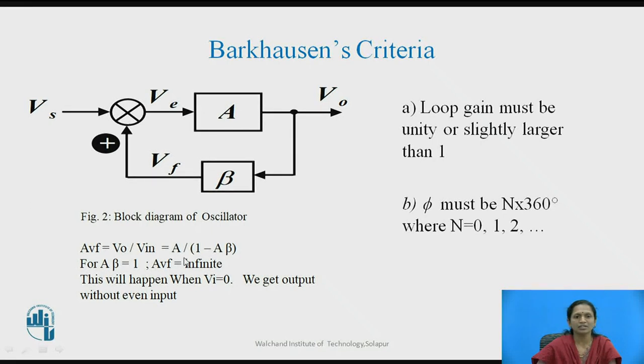If we convert this block diagram into a simple form, the total gain can be written as G divided by 1 minus G*H. This is the standard rule of control systems.